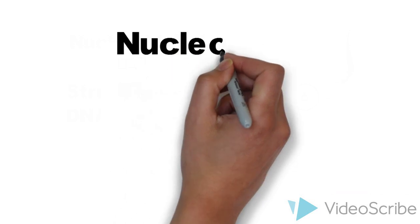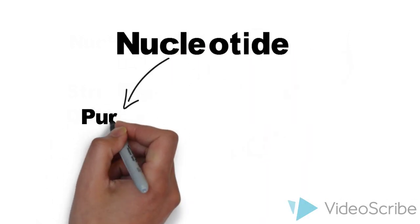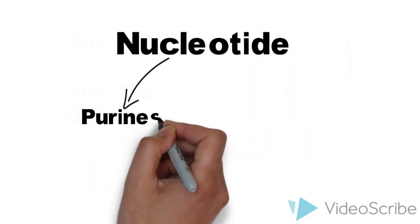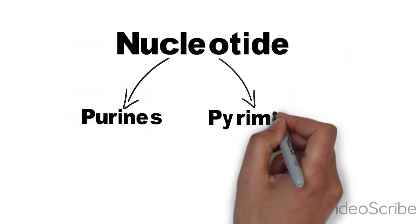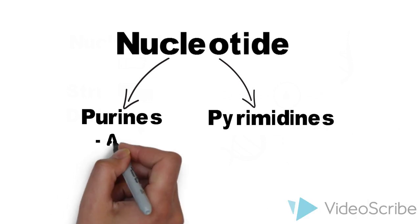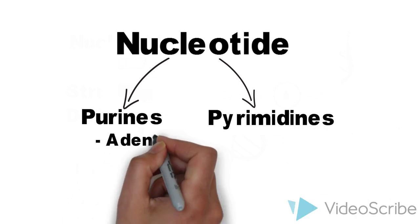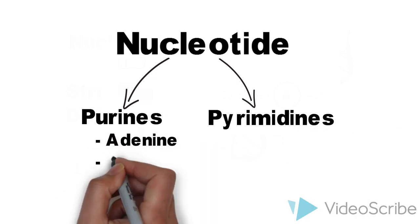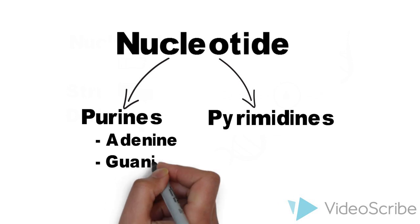There are two types of nucleotides: purines and pyrimidines. The two types of purines are adenine and guanine.